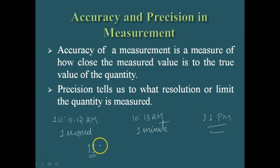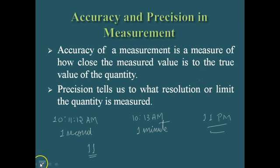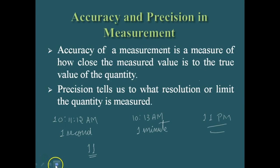A physical quantity should be measured with high accuracy and high precision. Many things play a very important role in measurement: the skill of the person doing the experiment, the quality of the instrument used, the method used for measurement, and external and internal factors affecting the results of the experiment.